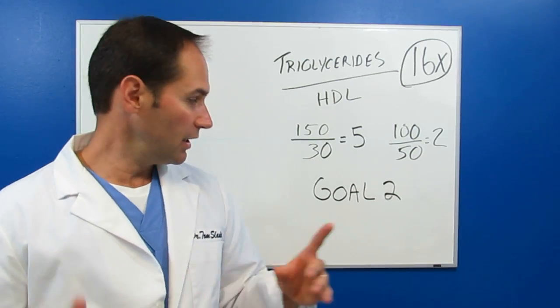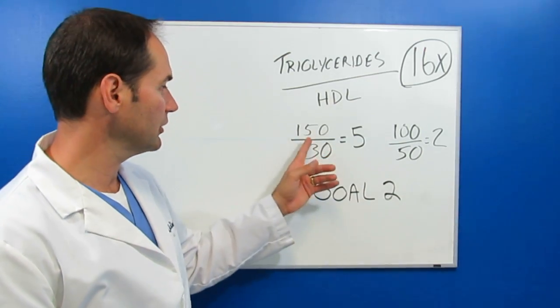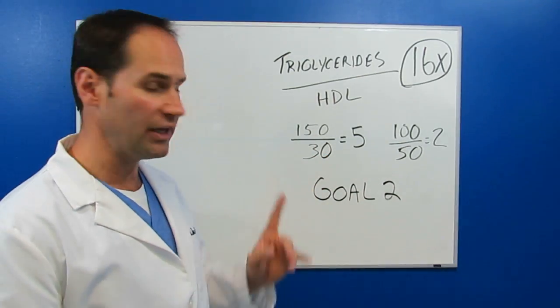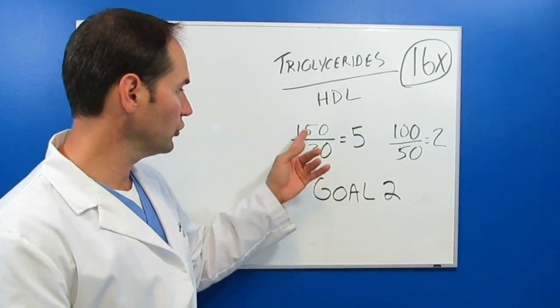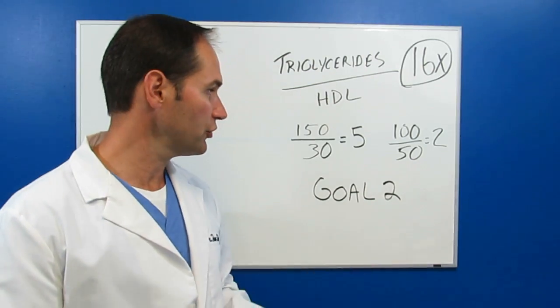What you're shooting for is a goal of 2. You want that number to be 2. So for example, let's say your triglycerides are 150 and your HDL is 30. You divide those two numbers and it equals 5. That's not good. You want that closer to 2.